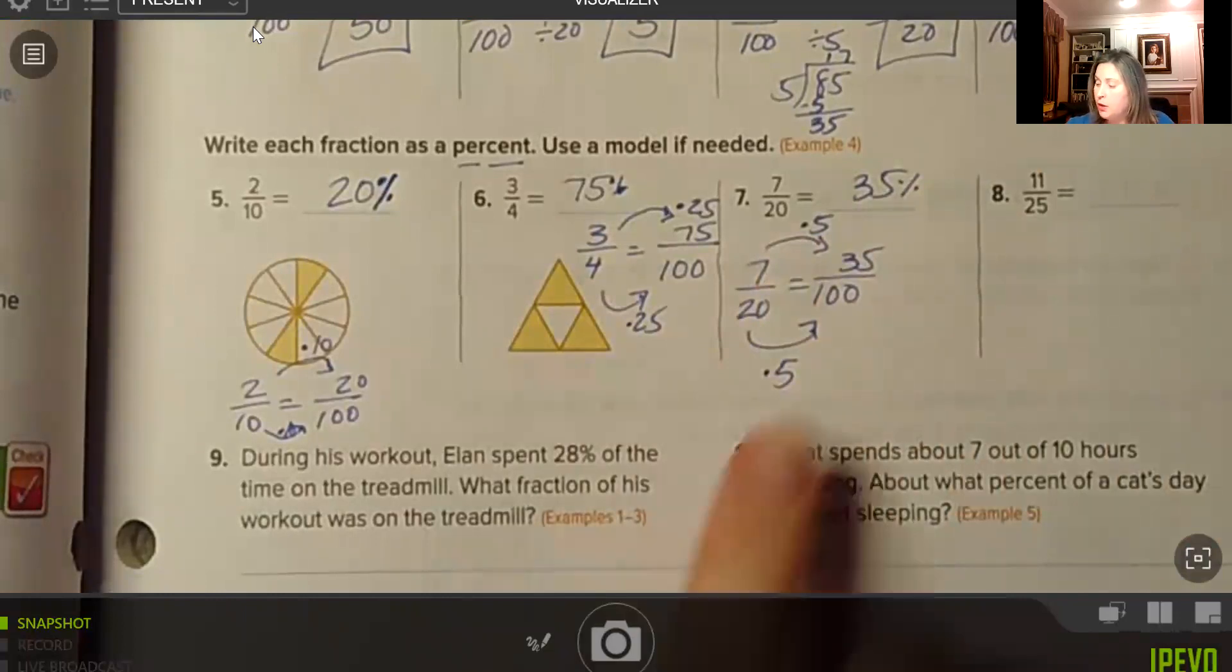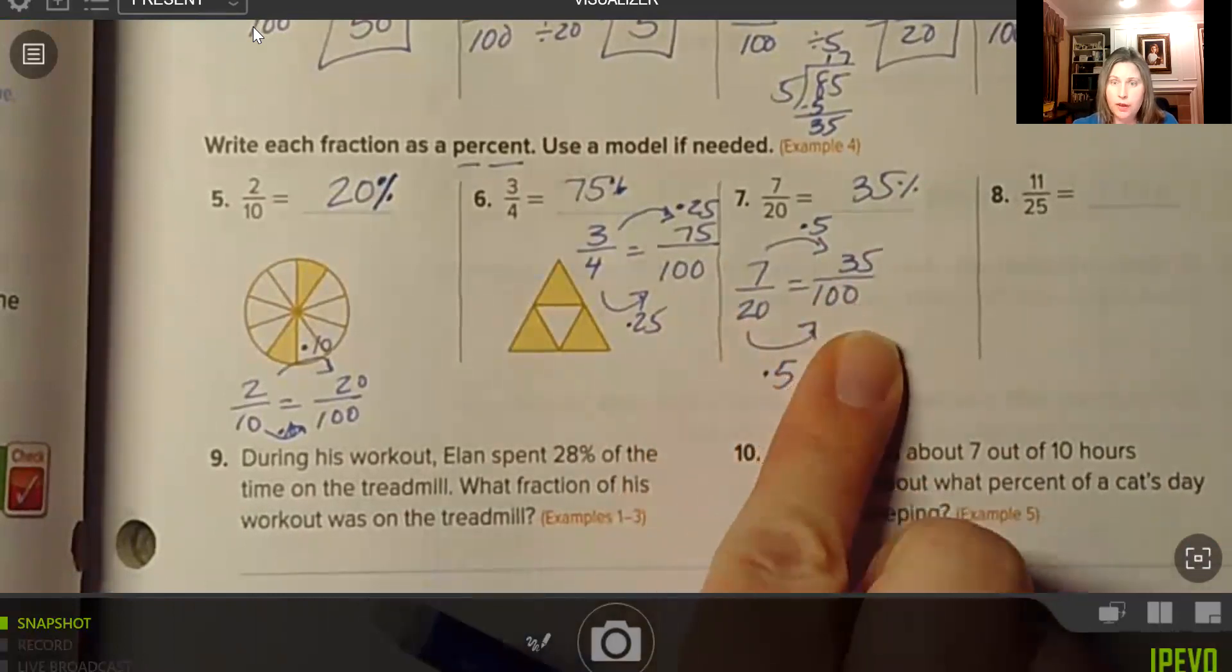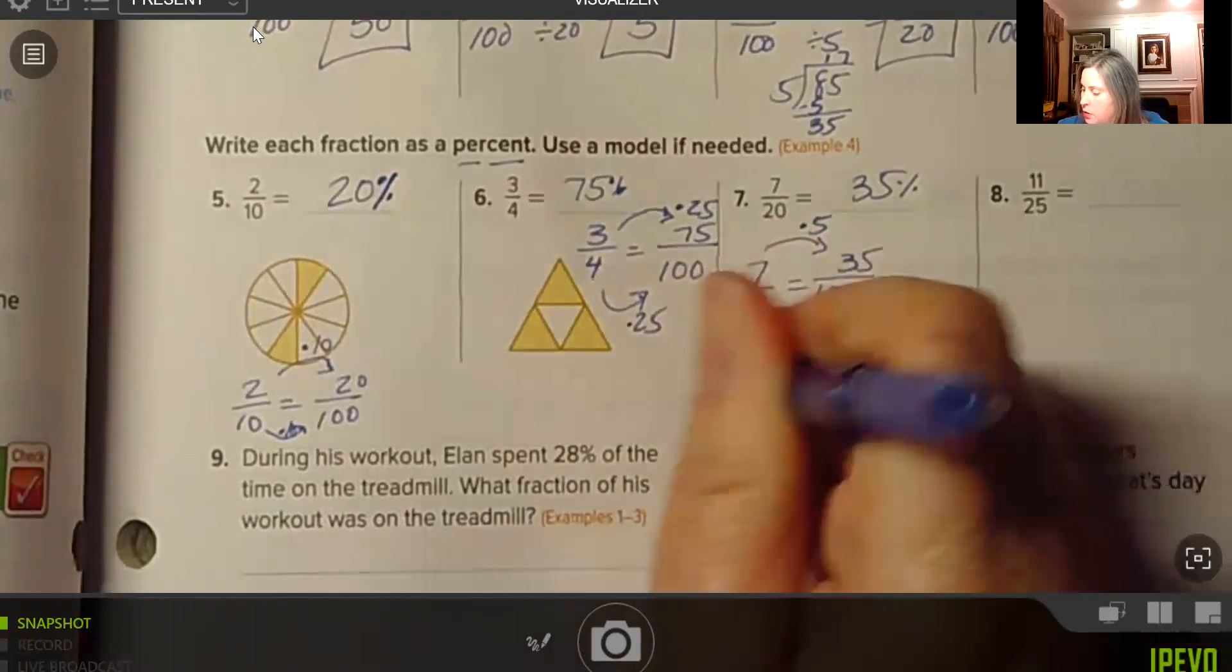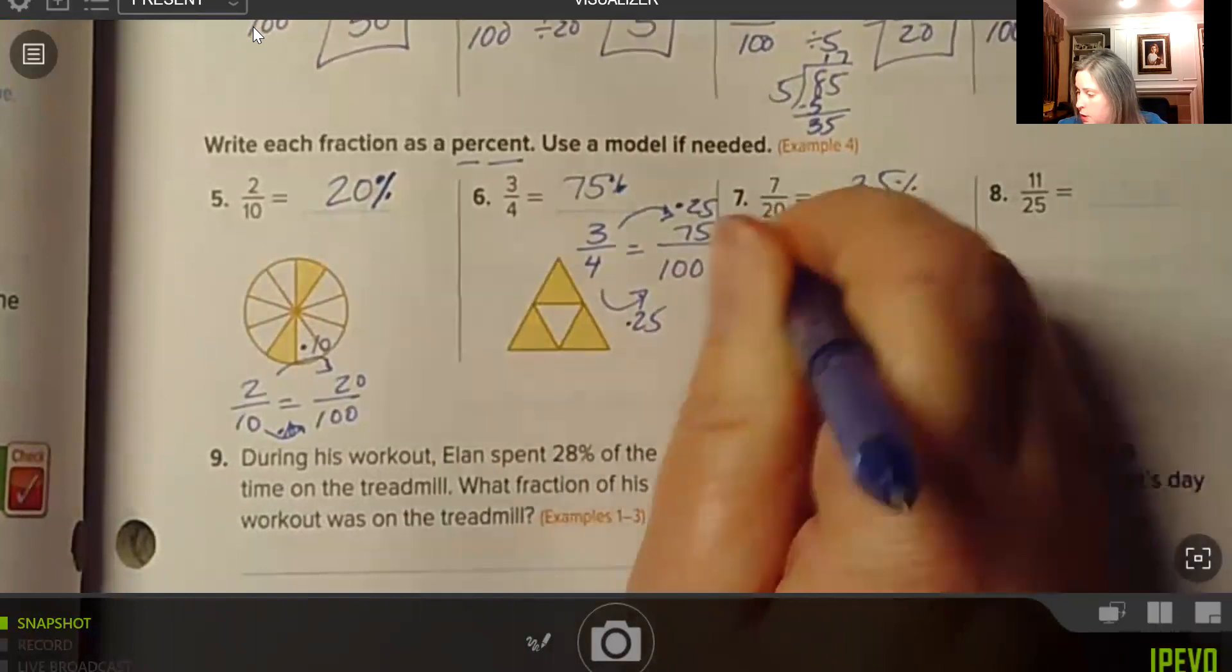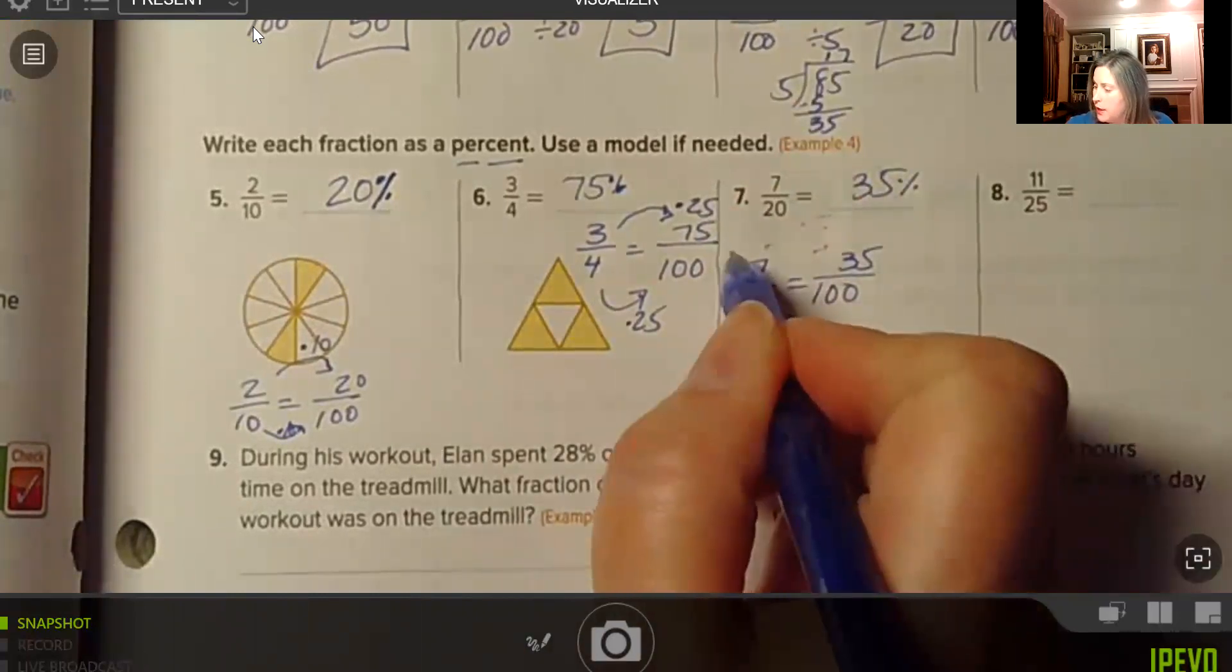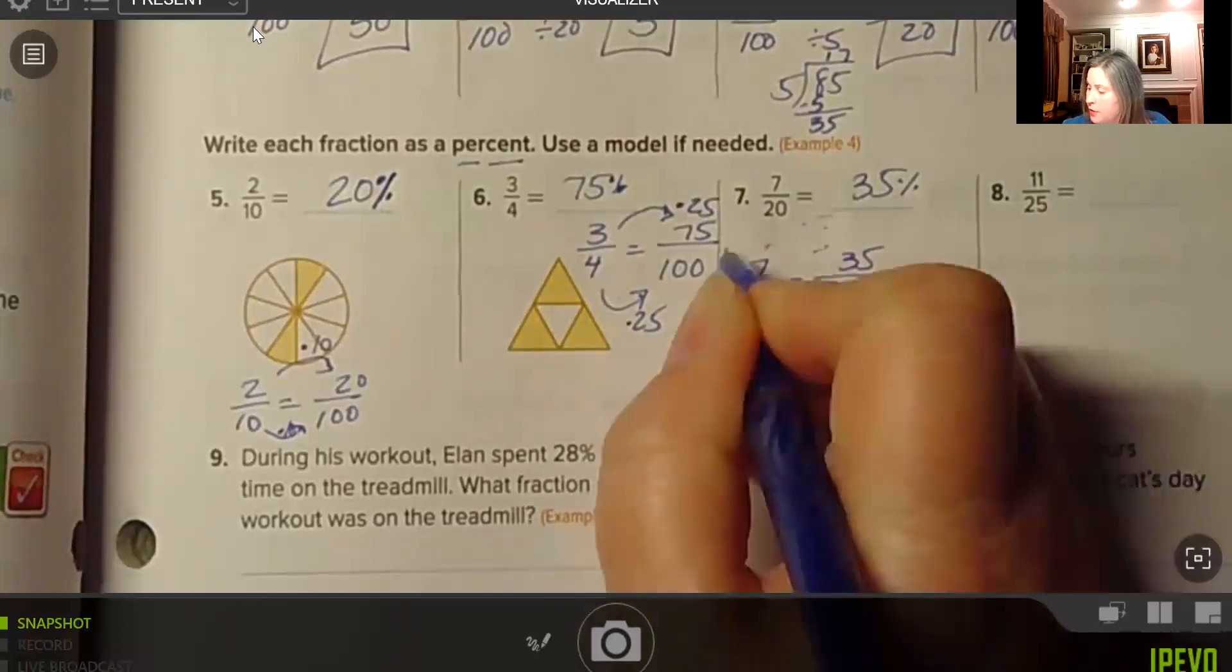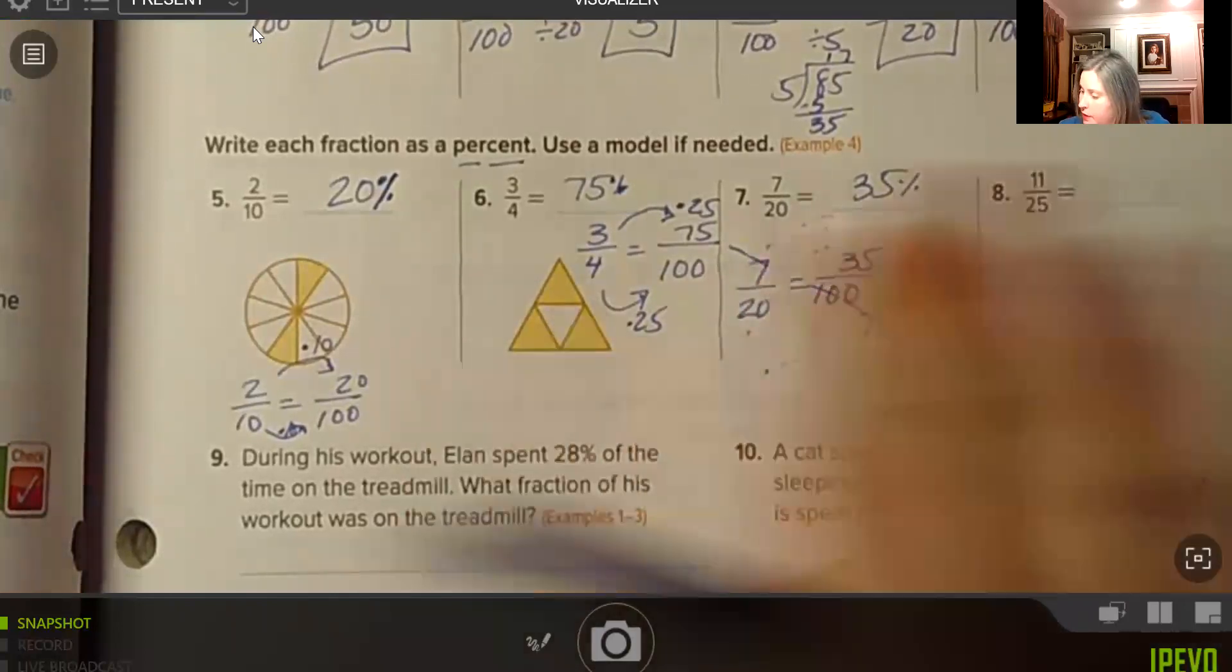And then here's a little fun tip that you will use when you're in pre-algebra. If you have a proportion, which we do here, 7/20 is indeed equal to 35/100. When you have a proportion, the cross products will always be equal. So 7 times 100, those are diagonal from each other. So 7 times 100 is 700.